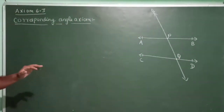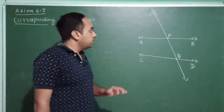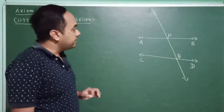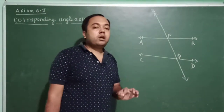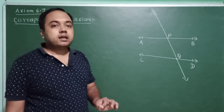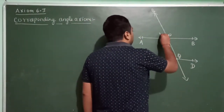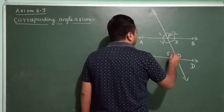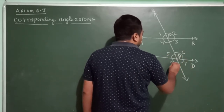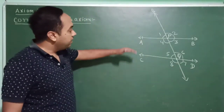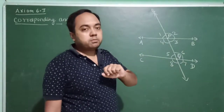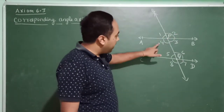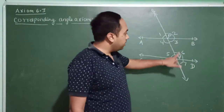What is Corresponding Angle Axiom? Corresponding Angle Axiom states that if a transversal intersects 2 parallel lines, then each pair of corresponding angles are equal. This means Angle 1 equals Angle 5, Angle 2 equals Angle 6, Angle 4 equals Angle 8, and Angle 3 equals Angle 7.